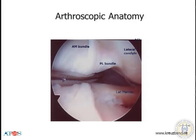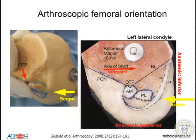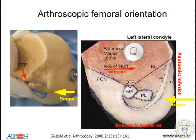Arthroscopic anatomy is very important because when we flex the knee, the PL bundle comes forward, as you can see here. We have to be sure that we understand this anatomy when we flex or extend the knee — this is important before we start reconstructing. Here you see the femoral orientation, and in yellow is the scope. At about 90 degrees you have the alignment of the ACL on the femoral side with the over-the-top position right here.